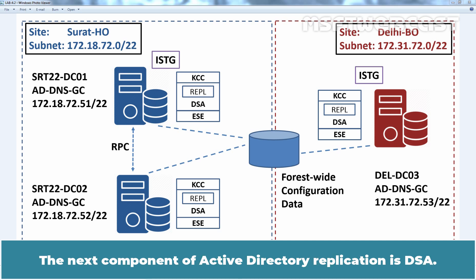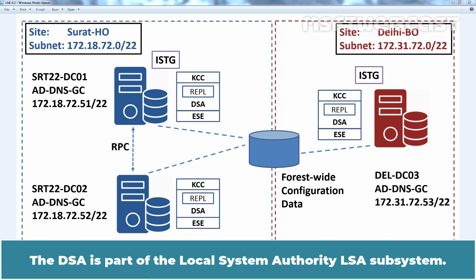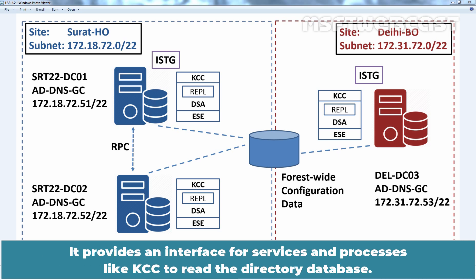The next component of Active Directory replication is DSA. The Directory System Agent is a directory service component that runs as NTDSA.dll on each domain controller. The DSA is a part of the Local Security Authority subsystem and provides an interface for services and processes like the KCC to read the directory database.